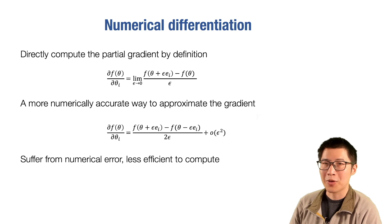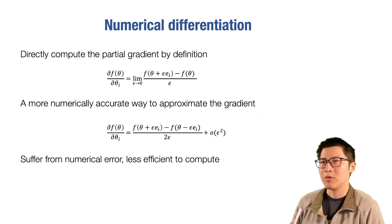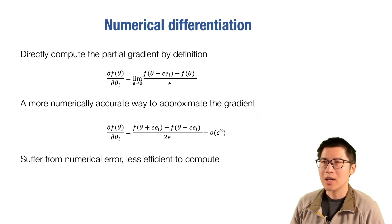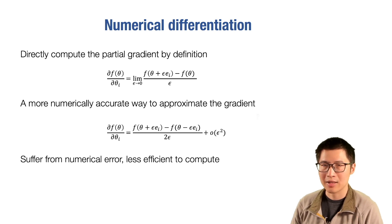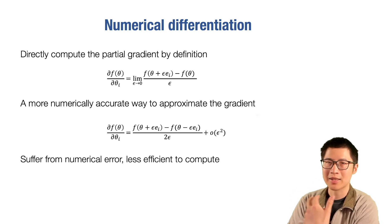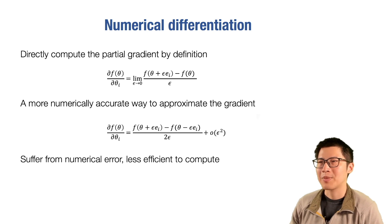This is not commonly used in practice because it suffers from numerical errors — epsilon needs to be very small — and it's inefficient. For each parameter i, we need to run 2*n forward evaluations of f for n parameters, which is really costly. So this formula is not used in practice for actually computing gradients.